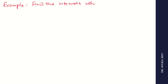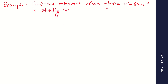Next example: find the intervals where f(x) equals x squared minus 6x plus 9 is strictly increasing. When we talk about strictly increasing and strictly decreasing, we always exclude the turning point. We never take the turning point in the answer.